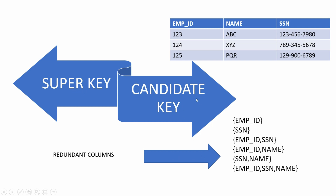Candidate key is the minimal super key with no redundant attributes. So for this example, only employee ID and SSN are candidate keys.